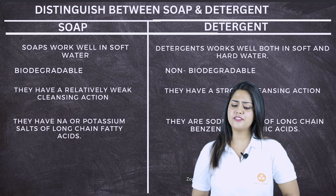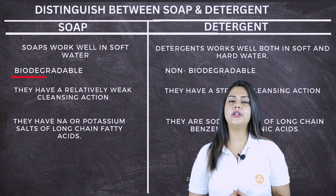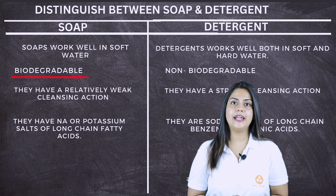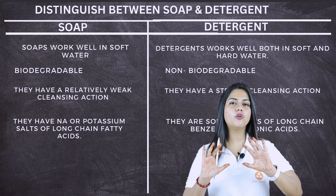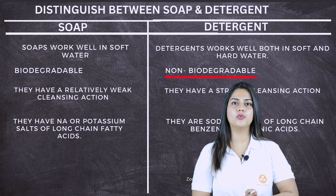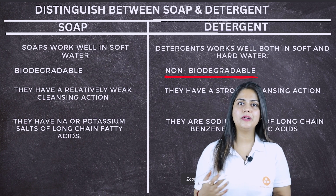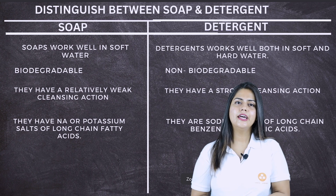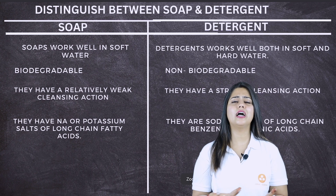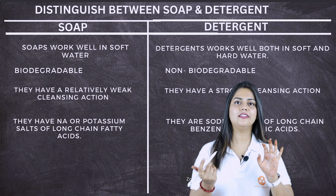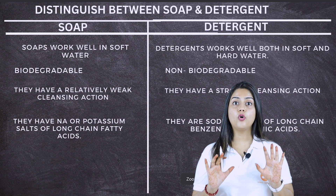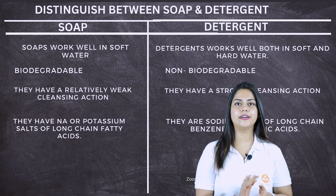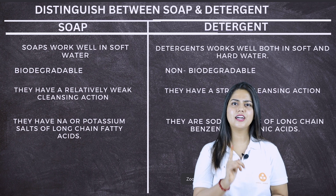The next point is that soap is biodegradable. On the other hand, detergent is non-biodegradable. This is not good for the environment because it is non-biodegradable and harmful. So soap is better — soap is biodegradable and will not harm the environment, but detergent will.